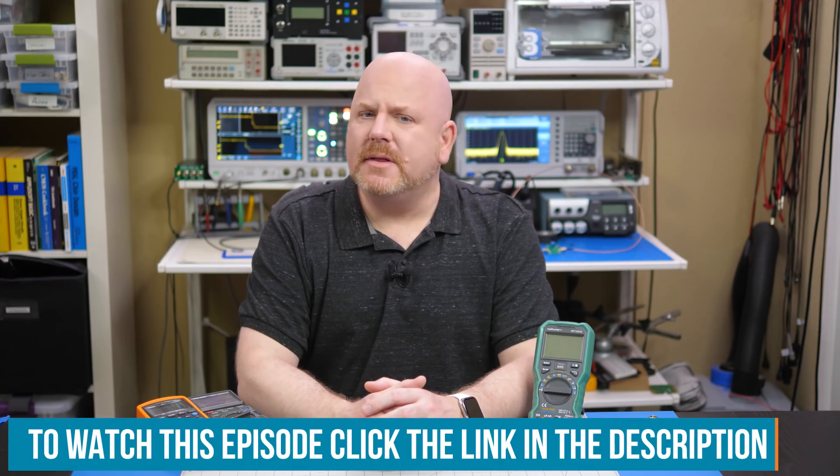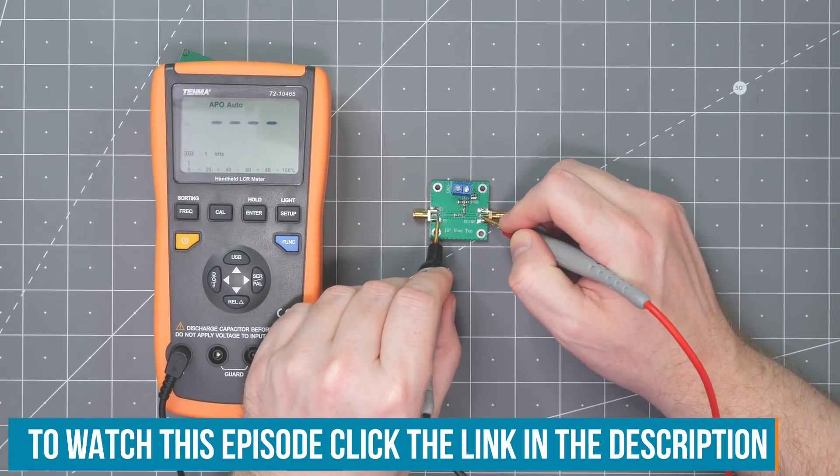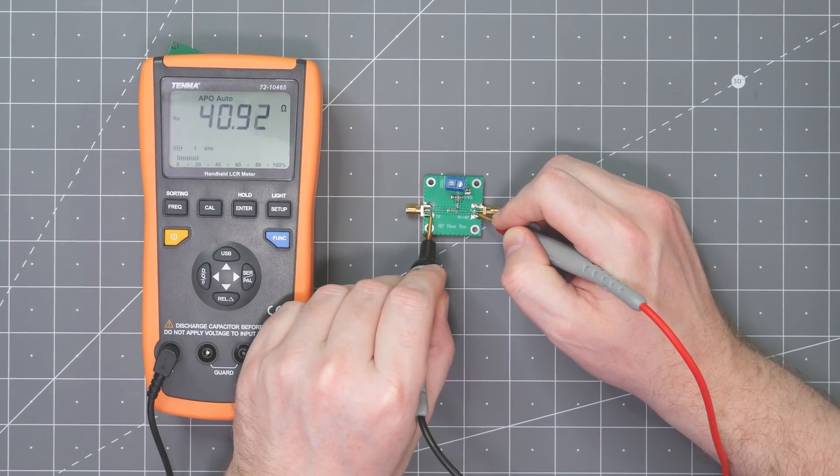By the way, remember the LCR meter from a previous episode? It uses an AC signal for its measurement, and it sees about 42 ohms of impedance between the SMA connectors.